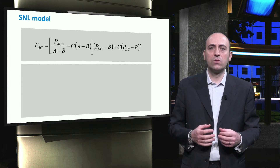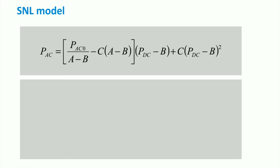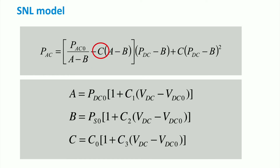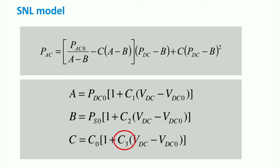The SNL model also provides empirical formulas for the AC power output as a function of different parameters, most of them already described in the previous slides. PAC0 is the nominal AC power of the inverter. PDC is the instantaneous DC power provided by the PV array. Some other empirical parameters are used: A, B, and C, all shown on the screen. In these three parameters, we can find some coefficients already seen before, such as PDC0, which is the nominal DC power input; PS0, which is the inverter self-consumption; VDC, which is the PV array side voltage; and VDC0, which is the nominal DC voltage value. The last parameters always provided by manufacturers are C0, which takes into account the curvature of the characteristic, and C1, C2, and C3, which are purely empirical parameters.